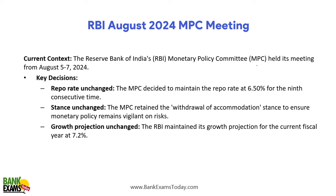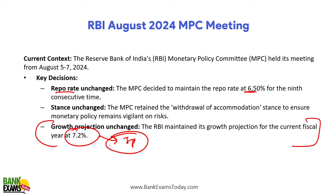In the RBI August 2024 MPC meeting, the repo rate remained unchanged at 6.5% and the MPC retained the withdrawal of accommodation stance. The RBI maintained its GDP growth projection for the current fiscal year at 7.2%. This projection is very important for exam purposes.